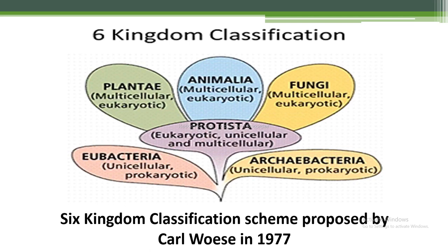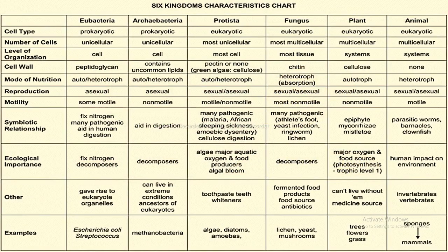So this is the six kingdom classification scheme proposed by Carl Woese in 1977, as shown in the figure. This is the six kingdoms characteristics chart. The kingdoms are: Eubacteria, Archaebacteria, Protista, Fungi, Plantae, and Animalia.